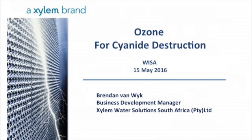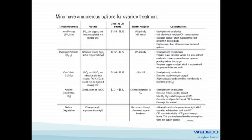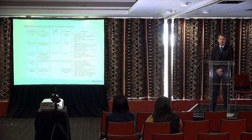Cyanide discharge into the environment has become an issue. Mines are looking at multiple different sources of discharge for cyanide into the environment — from tailings to process waters to scrubbing liquors. The current processes all have one inherent problem: they generate a secondary effluent that needs to be treated, or they concentrate the cyanide to a level which is again dangerous for discharge.